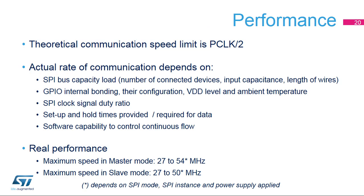The SPI performance depends mainly on the applied clock. At a minimum, the clock frequency should be twice the required communication frequency. The actual rate of communication can be decreased by application factors. The user has to consider SPI bus loads such as the number of nodes, the connection distance, the input capacitance, as well as the GPIO settings. Fast GPIO mode should be applied on the data and clock signals. Lower power supply voltage and extreme ambient temperatures slow down edges.